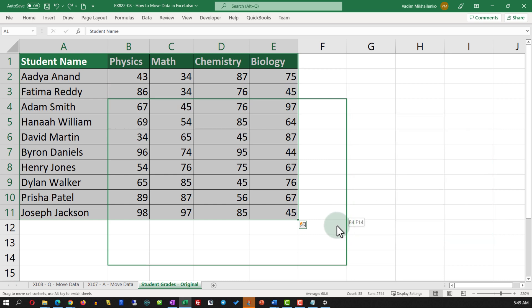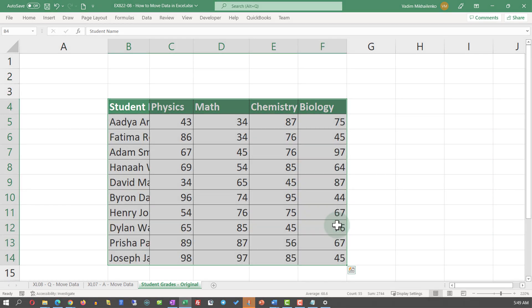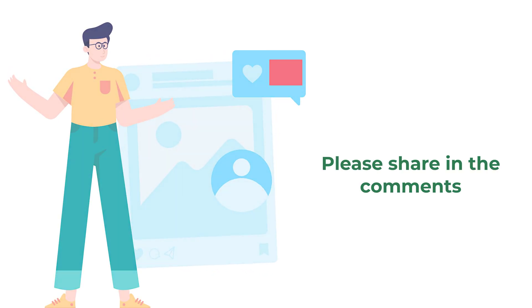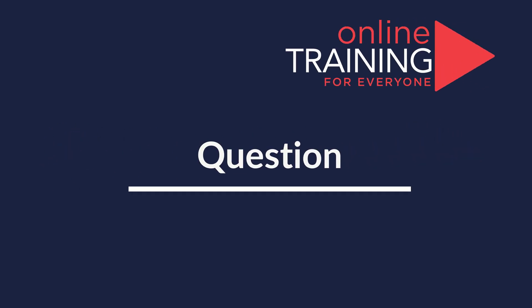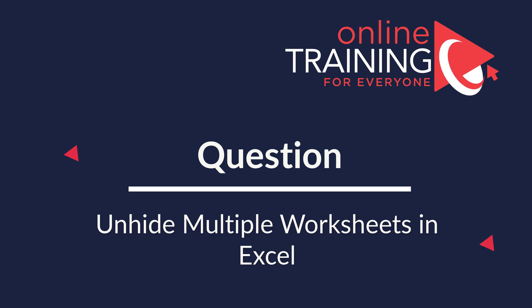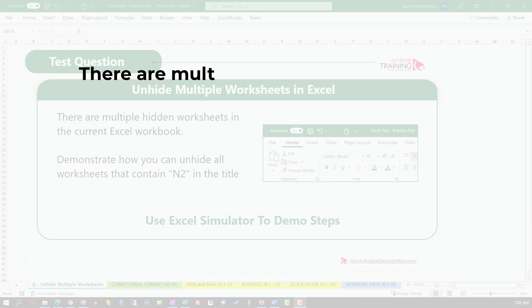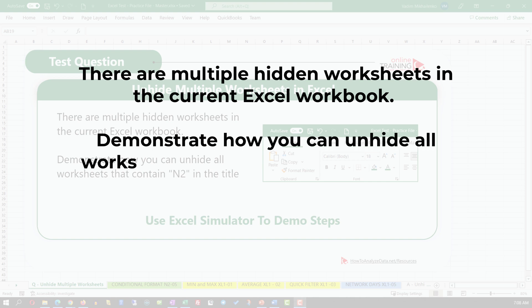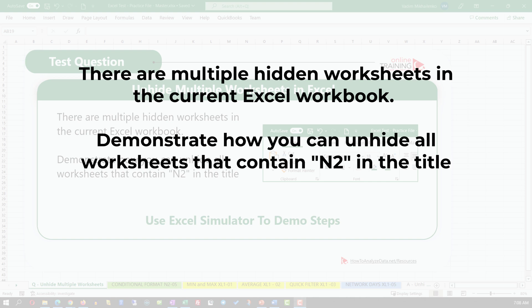And one cell to the left and position it in the new location. Do you know any other solutions? Please make sure to share them in comments. Here's an interesting question which we're starting to see on the test more and more often: there are multiple hidden worksheets in the current Excel workbook and you need to demonstrate how you can unhide all the worksheets that contain the string N2 in the title using the Excel simulator.